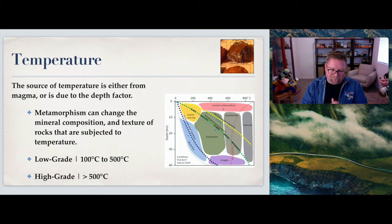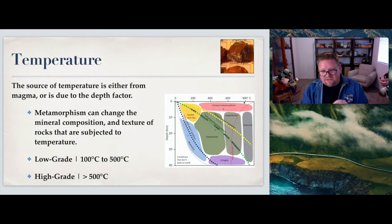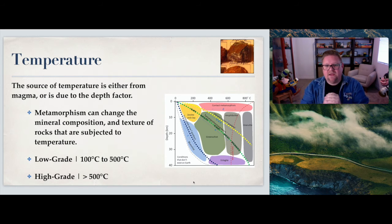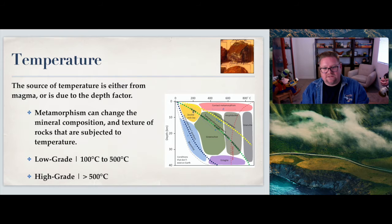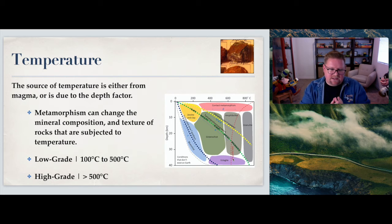Metamorphism can change the mineral composition and texture of these rocks that are subjected to temperature. We have either low grade or high grade. Low grade is between 100 to 500 degrees Celsius, high grade is 500 degrees Celsius and beyond. The diagram I decided to share on this slide is showing depth going down the table, and then we have an increase of temperatures. What's neat about this diagram is it's showing that because of transitioning from low to high grade and for depth, those are the type of rocks most likely going to be found within that environment. You can see slate at the top, phyllite, schist, gneiss, and migmatite, and then we can see other grain sizes and eclogite.